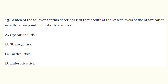Question number thirteen: which of the following terms describes risk that occurs at the lowest levels of the organization, usually corresponding to short-term risk? A) operational risk, B) strategic risk, C) tactical risk, D) enterprise risk. The correct answer is C, tactical risk. Tactical risk occurs at the lowest levels of the organization, usually corresponding to short-term risk.